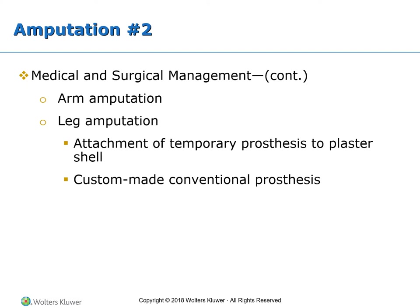Leg amputation is a more common operation than arm amputation. The above-knee amputation (AKA) is more disabling than a below-knee amputation (BKA). Therefore, unless evidence suggests that the knee cannot be saved, every attempt is made to amputate below the knee. The trend is to have a temporary prosthesis attached to a plaster shell covering the lower limb immediately after surgery, which reduces psychological trauma for the client because it promotes a more intact sense of body image after surgery.